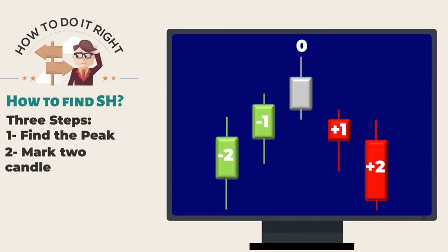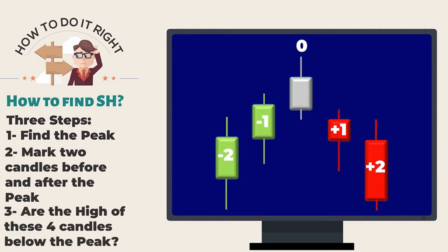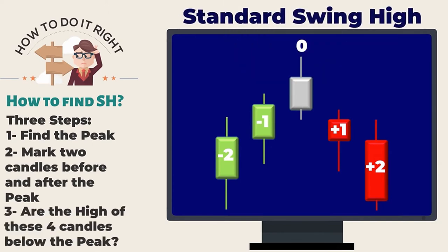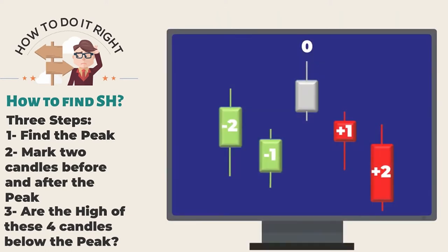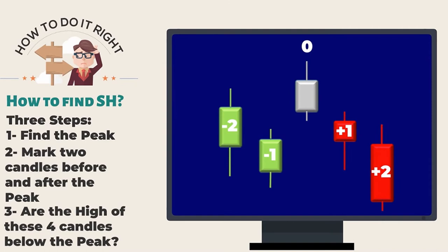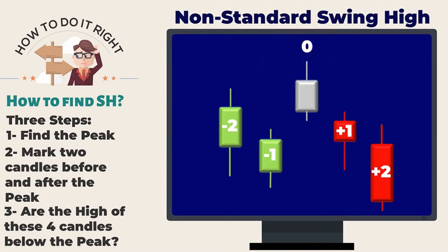As mentioned earlier on the three-step processes of identifying swing high, the standard swing high is formed when the high of four candles are sequentially lower than the high of the zero peak candle. However, the non-standard swing high is formed when the high of the four candles are lower than the high of the zero peak candle, but not in a sequential order.